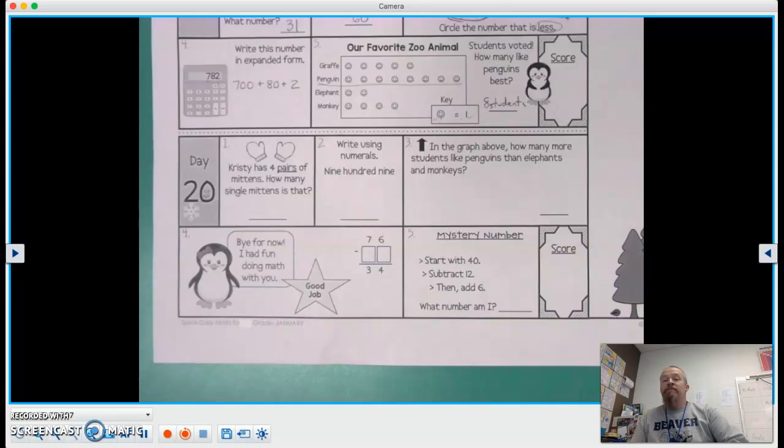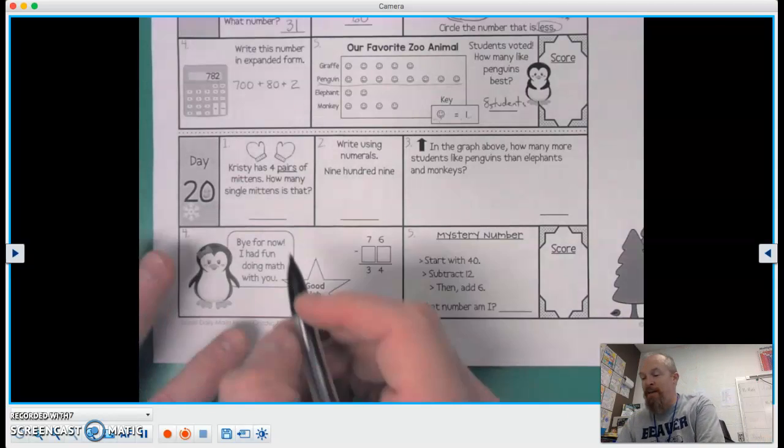So if we have four pairs of mittens, that means there's four left mittens and four right mittens. Four lefts and four rights. Each one of these is a pair of mittens, right? So if I have four lefts and four rights, how many single mittens is that? Four plus four is eight.